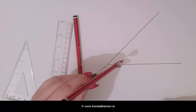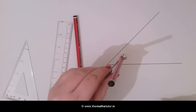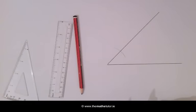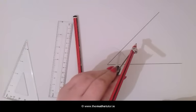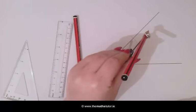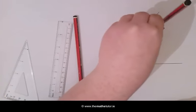Placing our compass where these two lines meet, draw an arc across this line. Move to this new arc and draw another arc, and move again and draw a third one.